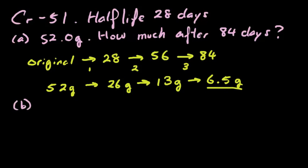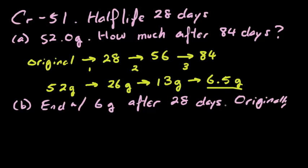Another problem using chromium-51 with a half-life of 28 days is what if they give us a question kind of in reverse. What if we end with 6 grams after 28 days? How much did we have originally? So for this particular problem, we do the same thing in a sense, except we work backwards. So we know that we're using the same problem. We need to make an adjustment to this. How much did we start with?